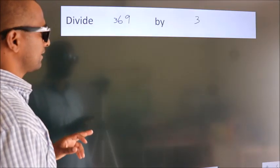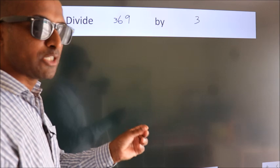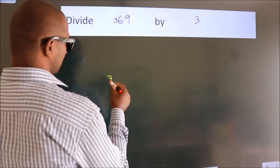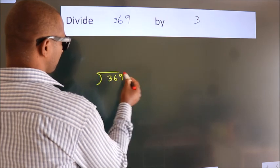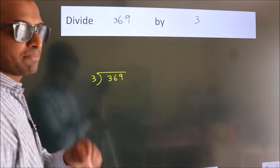Divide 369 by 3. To do this division, we should frame it in this way. 369 here, 3 here. This is your step 1.